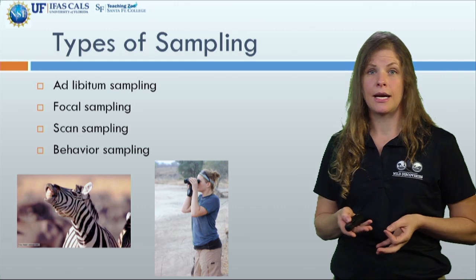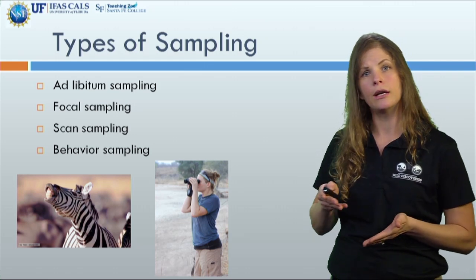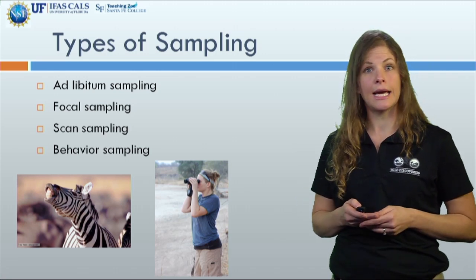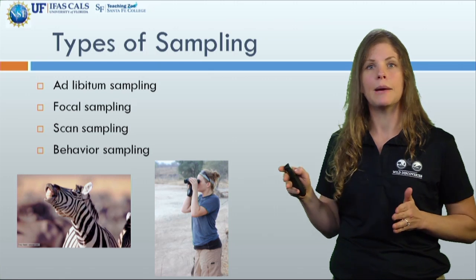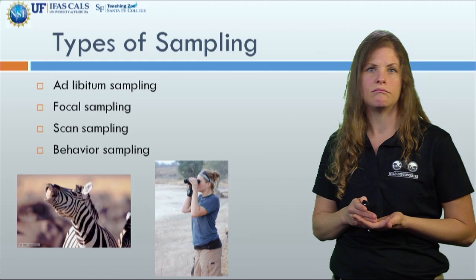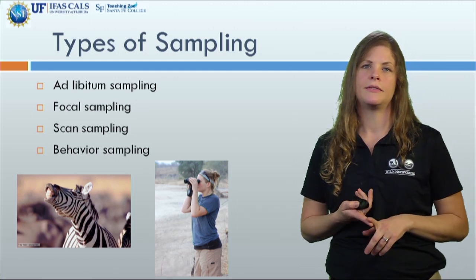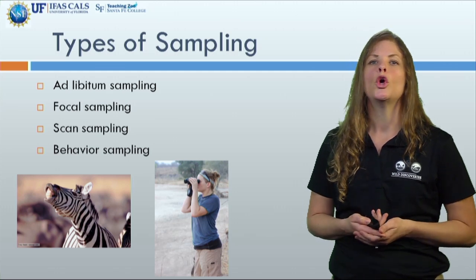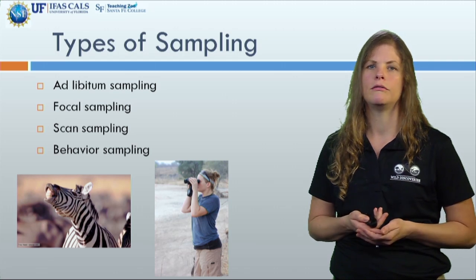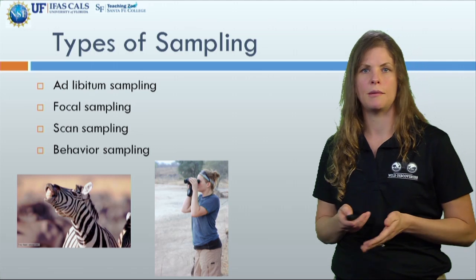When using scan sampling, one or more individuals in a group is scanned at regular intervals and their behavior is recorded. I like to think of scan sampling as a quick snapshot of what an animal is doing, repeating this every 30 seconds for a set amount of time. Finally, the last type of sampling is called behavioral sampling, where the observer watches and records specific and often rare behavioral events only, like fighting or breeding behavior.